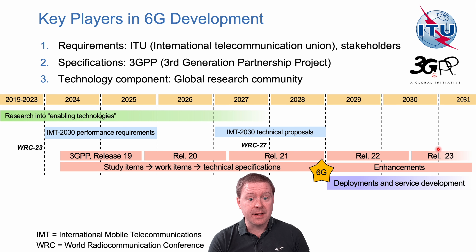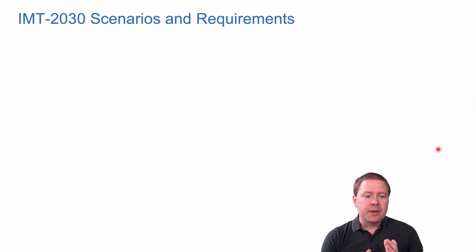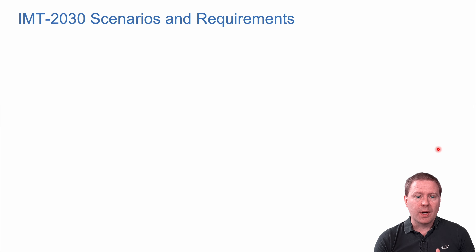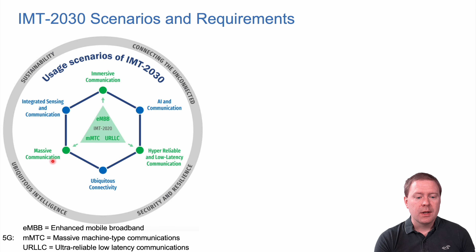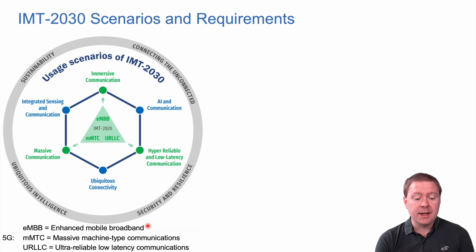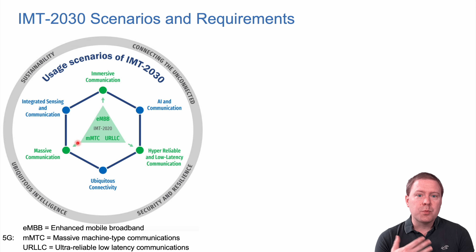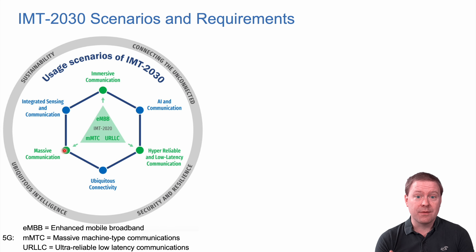When it comes to the IMT-2030 scenarios or requirements that ITU is creating, we don't have all the details yet but here is what we know. In terms of usage scenarios, in 5G there were three categories: enhanced mobile broadband, massive machine-type communications for Internet of Things, and ultra-reliable low-latency communications for critical communications. These form the edges of a triangle, and 6G improvements get new names: immersive communications for mobile broadband, hyper-reliable and low-latency communications for the ultra-reliable case, and massive communications for massive Internet of Things.